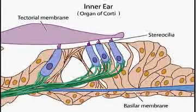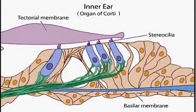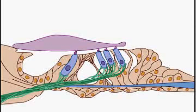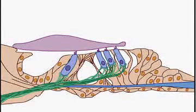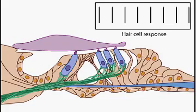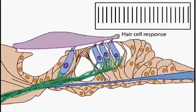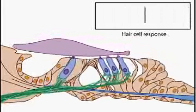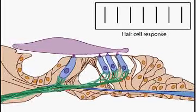The stereocilia of the outer hair cells extend into indentations in the bottom of the tectorial membrane. Movement of the fluid in the cochlea produces vibrations of the basilar membrane. These vibrations, acting on the stereocilia inserted into the tectorial membrane, cause ion channels in the hair cells to either open or close depending on the direction of the bend, ultimately increasing or decreasing the firing rate of the auditory nerve fiber.